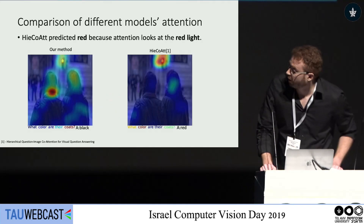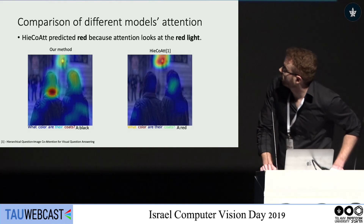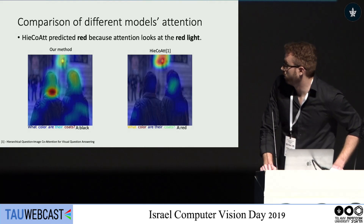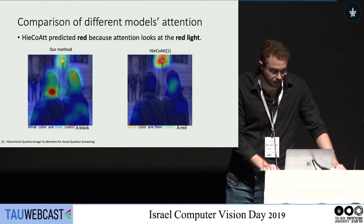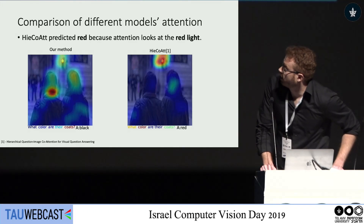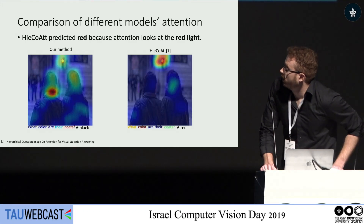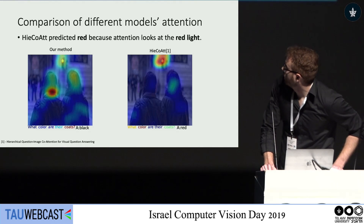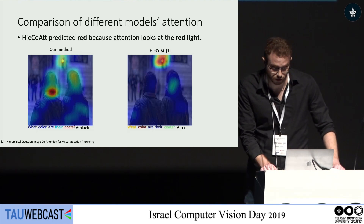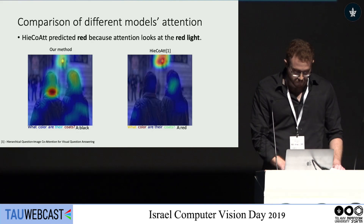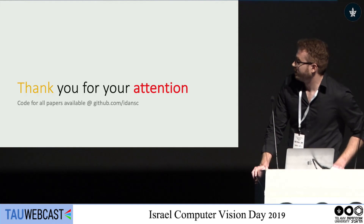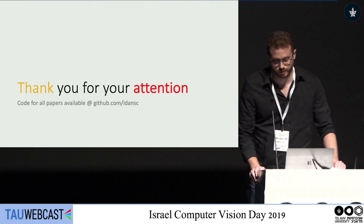Finally, comparing with other models: for VQA, hierarchical question-image co-attention for visual question answering is also an attention method. In one example, when the question is 'what color are their coats?', we got the correct answer 'black', while they got 'red' — because their attention looked at the red light instead. That's it — thank you for your attention. Code is available on my GitHub.